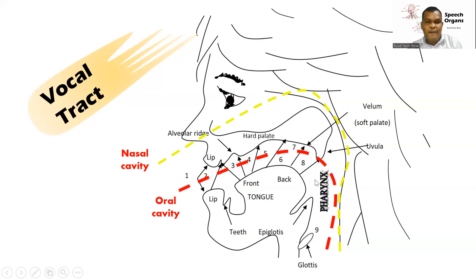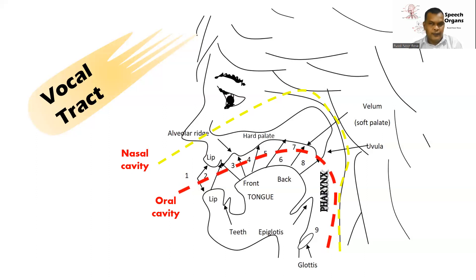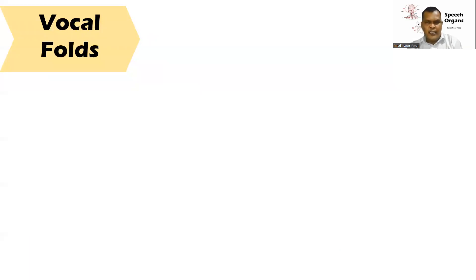Then we have the pharynx. The pharynx is the edge of our throat — it can be considered as part of our throat. So these are the organs of speech located in our head, also known as the vocal tract. Now let's look at the organs of speech located in our neck. As I mentioned, the main organ of speech located in our neck is our larynx.